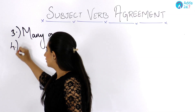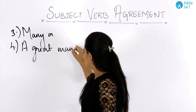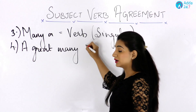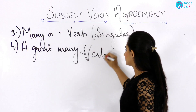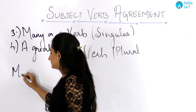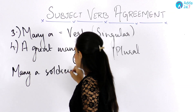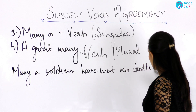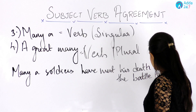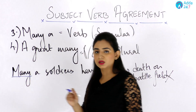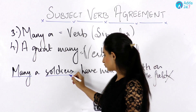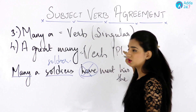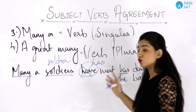The next rule: if we have 'many a' at the beginning of the sentence, it follows a singular form of verb. For example, 'Many a soldiers have met his death on the battlefield' is incorrect. With 'many a', the noun should be singular — 'soldier' — and the verb should also be singular — 'has'. Similarly, the pronoun used with 'many a' should be singular as well.